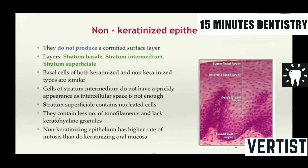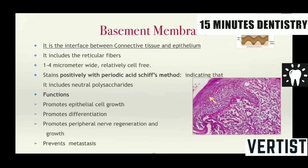We go ahead and talk about non-keratinized epithelium. Non-keratinized epithelium does not produce a self-cornified surface layer. They have only three layers: stratum basalis, stratum intermedium, and stratum superficiale. The basis of both keratinized and non-keratinized are similar. The cells of the stratum intermedium do not have prominent intercellular spaces. Stratum superficiale contains nucleated cells. They have fewer tonofilaments, less keratohyaline granules. And non-keratinized epithelium has a higher rate of mitosis than keratinizing oral mucosa.